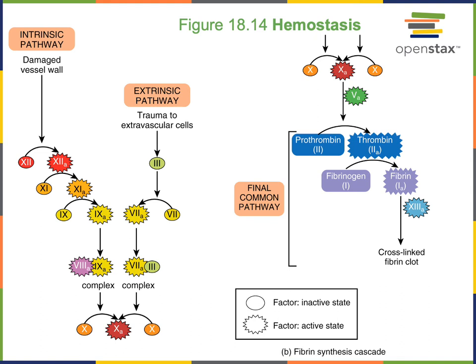The clotting factors are all numbered. There are 12 different clotting factors numbered 1 through 13, with no clotting factor number 6 — it was previously believed to be a distinct factor but was later found to be the same as another factor. The clotting factors are numbered in the order they were discovered, not in the order they become activated in the coagulation mechanism.